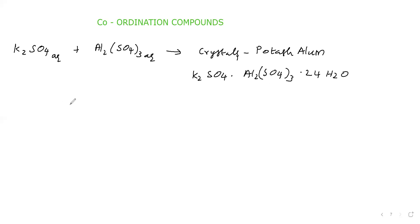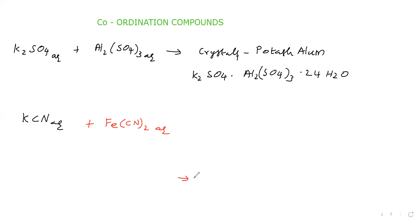Next, we will take a KCN aqueous solution and Fe(CN)₂ salt solution. These two solutions we will mix and bring to saturated condition, then go for crystallization. We will get crystals. These crystals are also obtained by mixing these two compounds. Therefore, it is also called an addition compound or molecular compound.